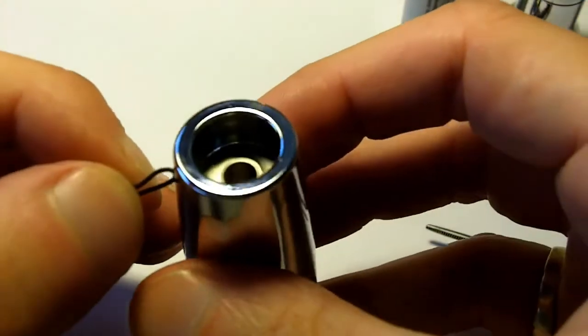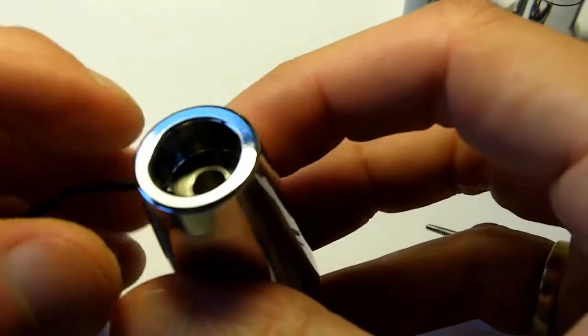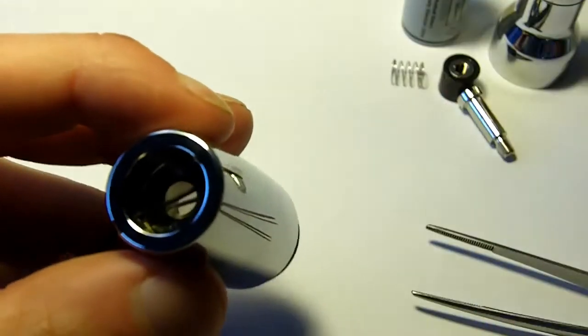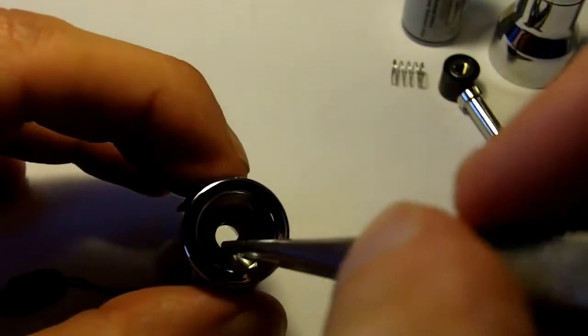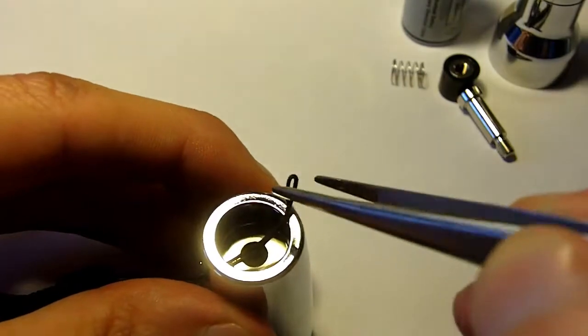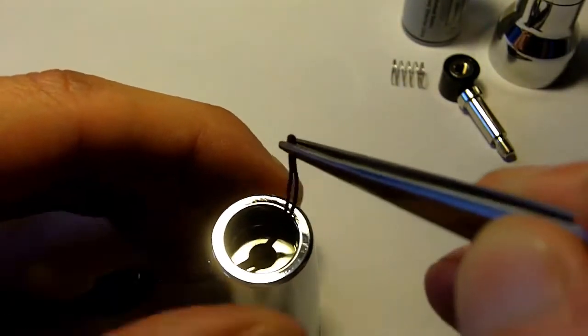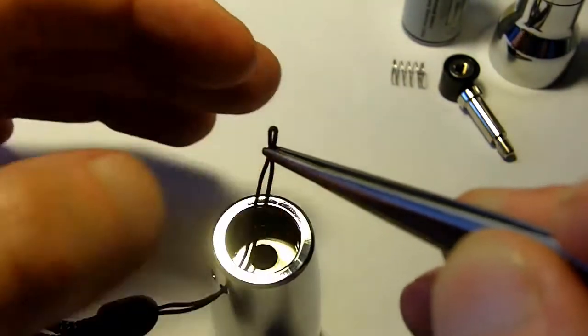You've got two holes, as you can see. Thread the nipped end through the first hole, like that, if you can see that. Take some tweezers, try and get it right near the end so you can nip it. About there.